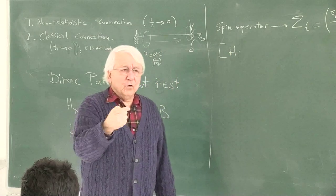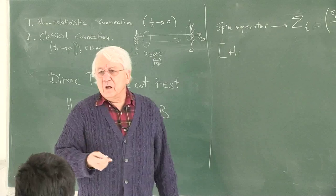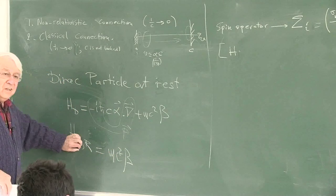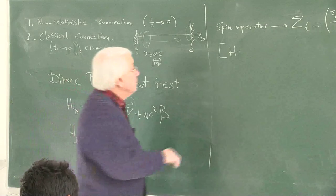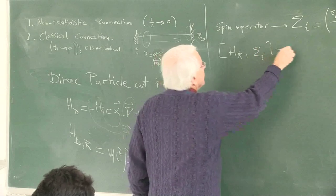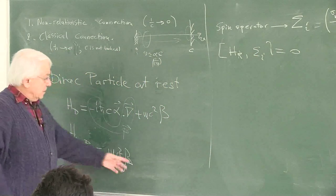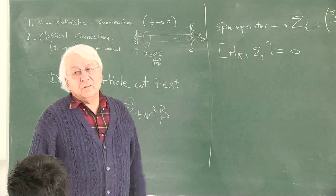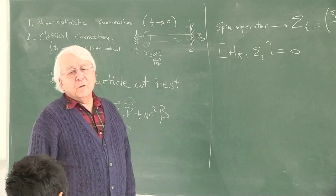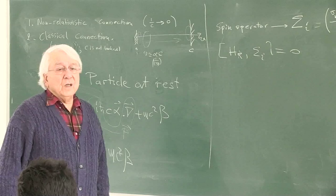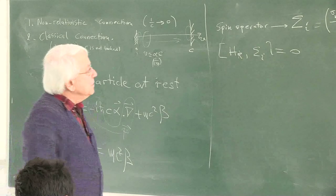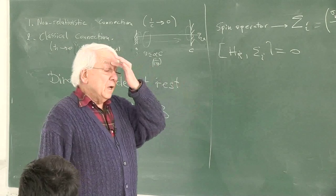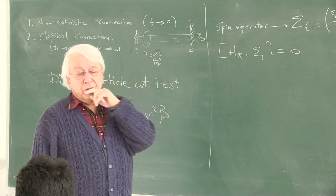Let me suppress the D when talking about the Hamiltonian - I'll not complicate the notation. So H_R and sigma_i commute. Is it obvious? More or less, yes - because beta is a diagonal matrix with 1 and minus 1 in the diagonal blocks, and sigma_i is sitting in the diagonal blocks. It's a trivial half-minute exercise to demonstrate that they commute, because identities commute with any matrix and it is the identities we have in the block diagonals.